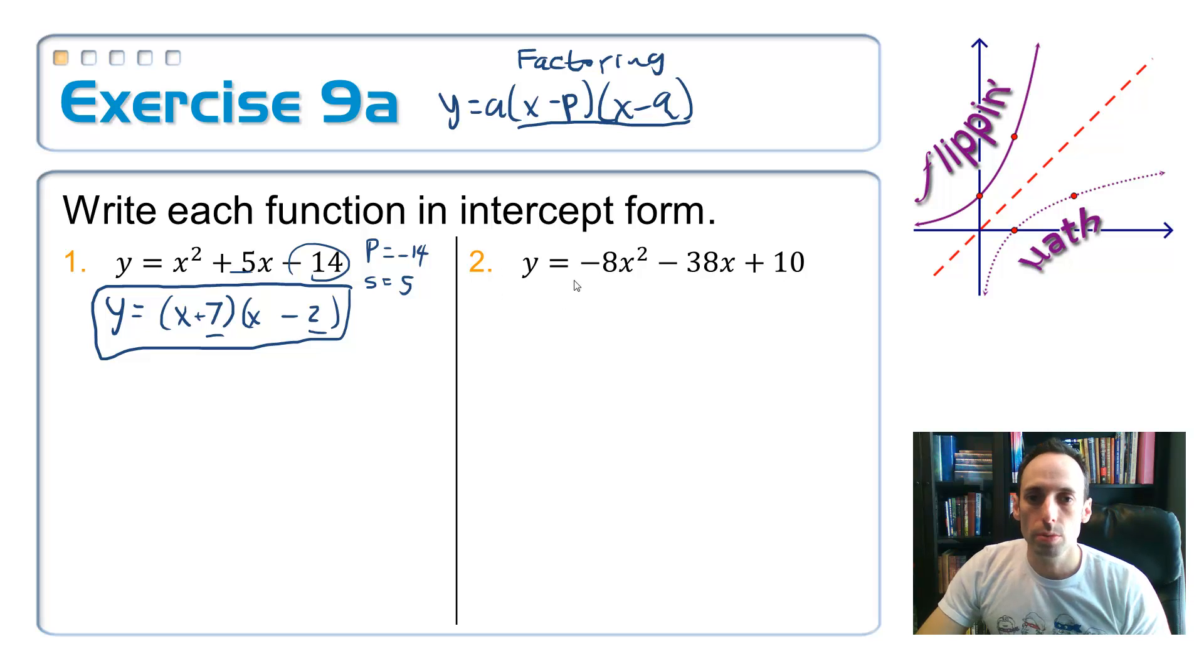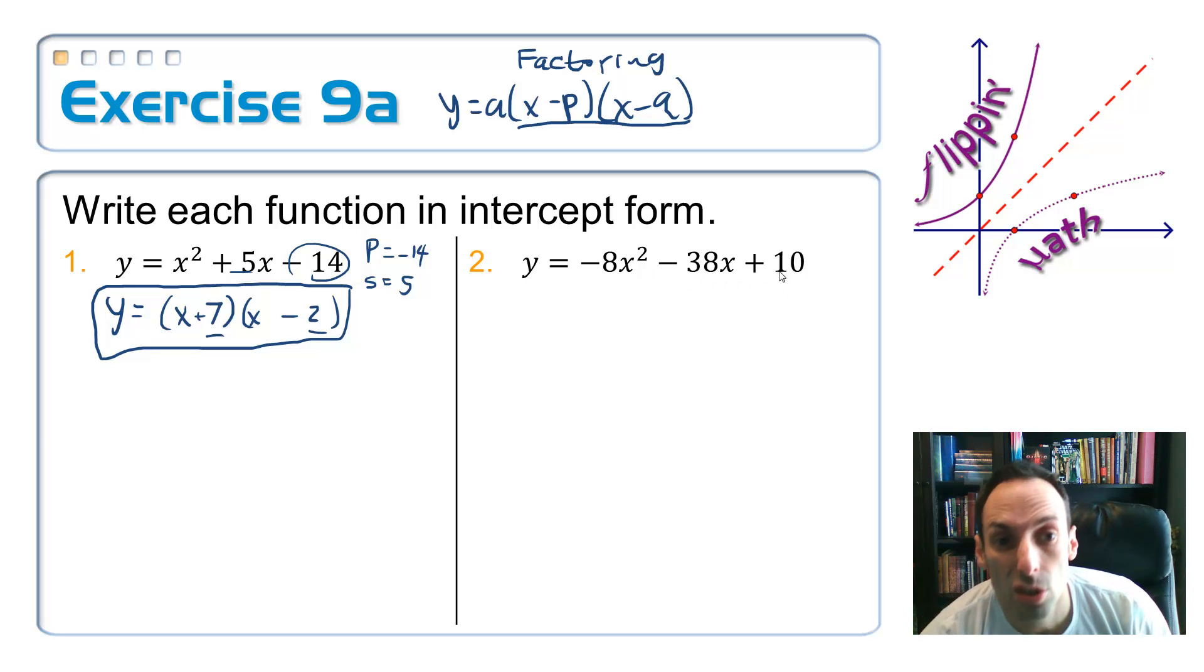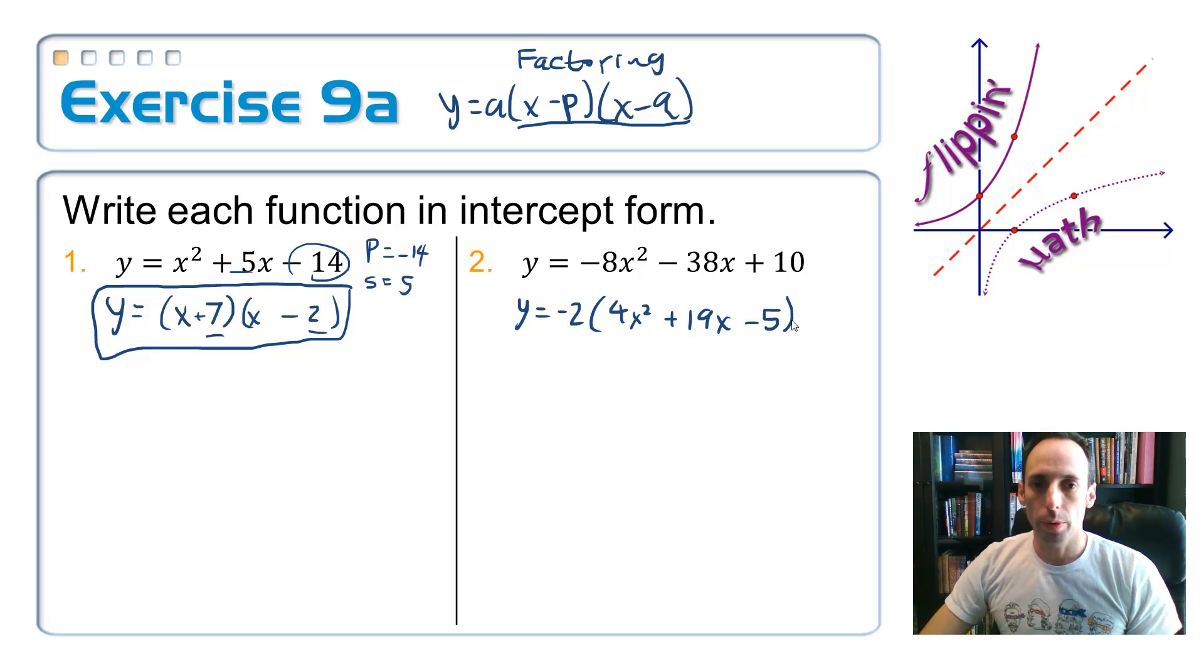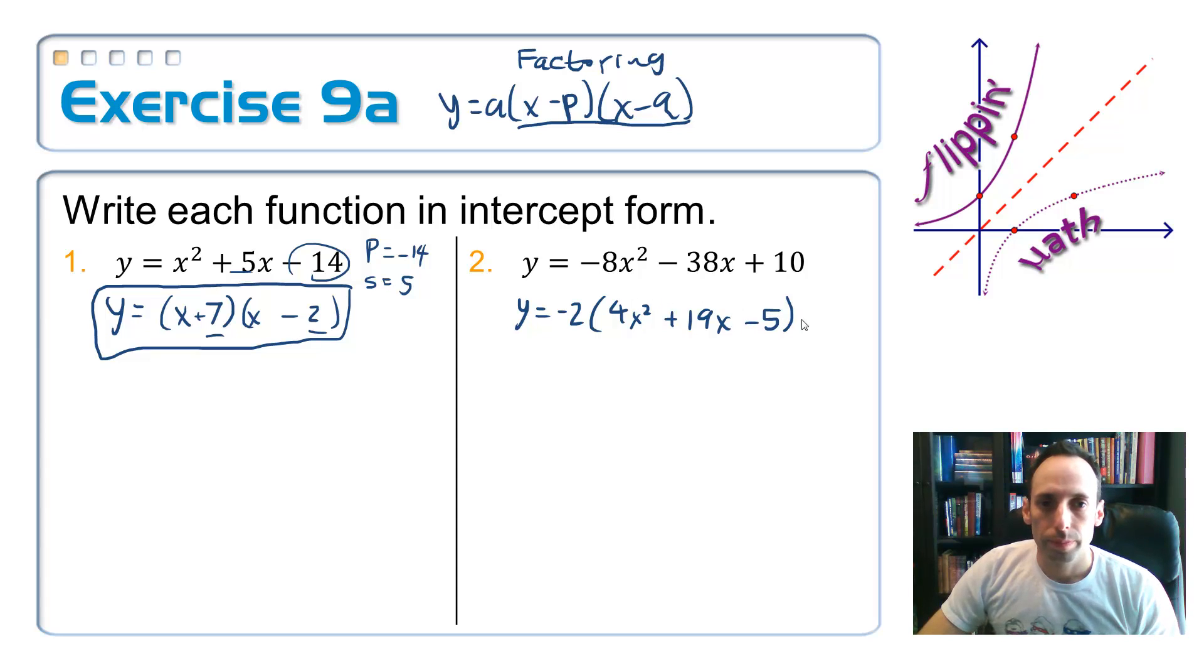How about number 2 here? So, notice first of all that I've got a negative out front. I don't want that. So, I'm going to pull that thing out. And then, everything is at least divisible by 2. So, let's pull that out as well. So, the GCF is negative 2. And then, I'd have 4x squared plus 19x and minus 5. There we go. And now, let's foil. No, no, no. Factor.